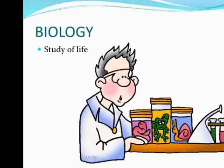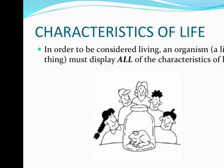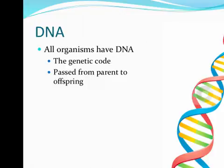You're going to be studying biology this year, and biology is defined as the study of life. An organism is a living thing — all living things are considered organisms. In order for something to be considered living, it has to show all of the characteristics of life. Something like a computer or a car shows many of the characteristics of life but not all of them, therefore it's not considered living. The first characteristic of life is that all organisms have DNA — the genetic code that is passed from parent to offspring.